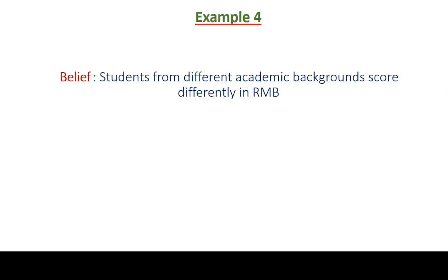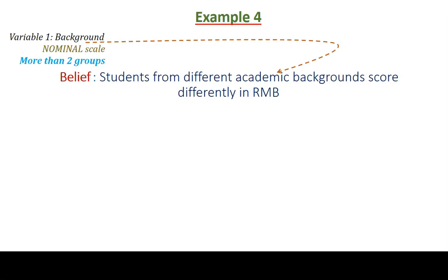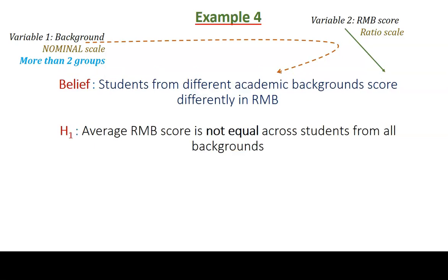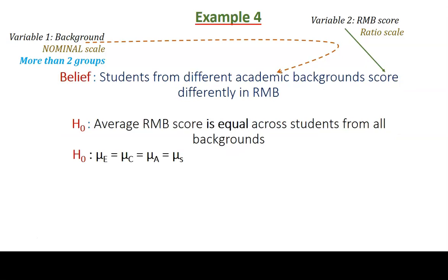Another example: the belief is that students from different academic backgrounds score differently in RMB. We can have more than two groups — arts, science, commerce, and engineering — and the RMB score is in ratio scale. The null hypothesis is: average RMB score is equal across students from all backgrounds (mu_E = mu_C = mu_A = mu_S). The alternative hypothesis is that average RMB score is not equal across all backgrounds. Our job is to reject this null hypothesis to establish that our belief is correct.